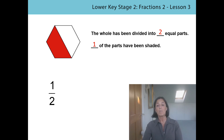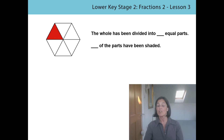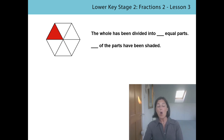The one is the number of equal parts that have been shaded. Let's do the next one. Don't forget to do that division bar as soon as you say that first bit, because remember that represents the division relationship between the whole and the part. All together: the whole has been divided into six equal parts and one of the parts has been shaded.